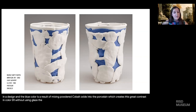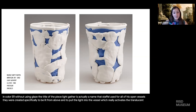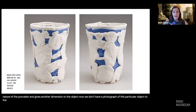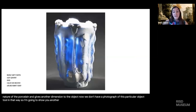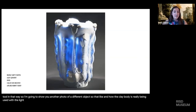The title of the piece, "Light Gatherer," is a name that Staffel used for all of his open vessels. They were created specifically to be lit from above and to pull the light into the vessel, which really activates the translucent nature of the porcelain and gives another dimension to the object. We don't have a photograph of this particular object lit in that way, so I'm going to show you another photo of a different object so you can get a sense of how the clay body is really being used with the light to create this effect.